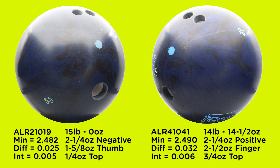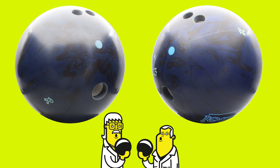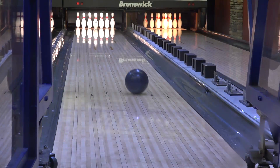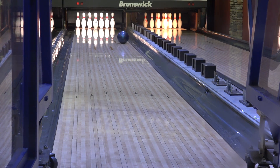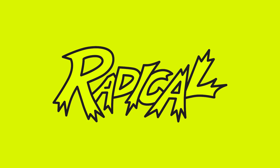Our overall conclusion is that pin placement in a symmetrical ball will dictate ball motion, and the static weights after drilling have little to no impact on ball motion. So when dealing with the new USBC rules, remember: symmetrical balls, CG placement, and static weights don't matter. Get the pin in the right spot to get the desired ball motion you need.